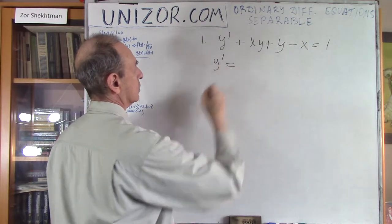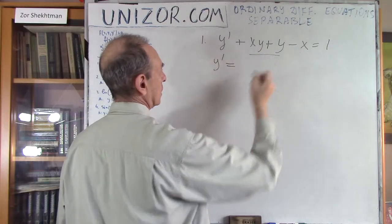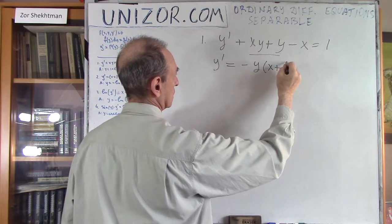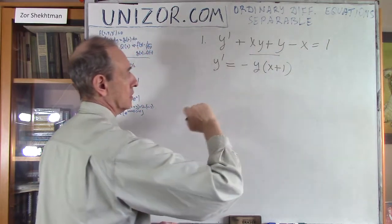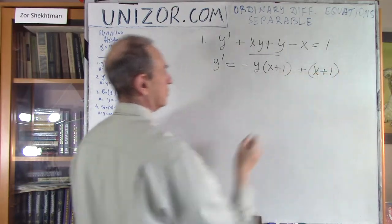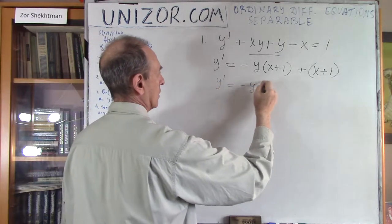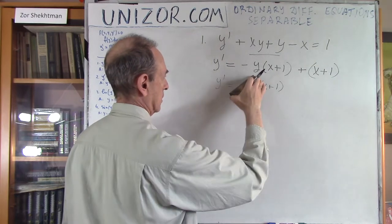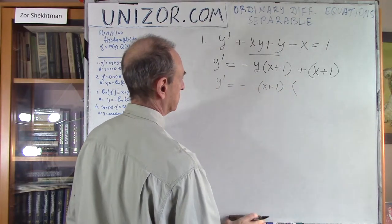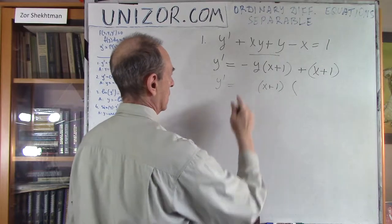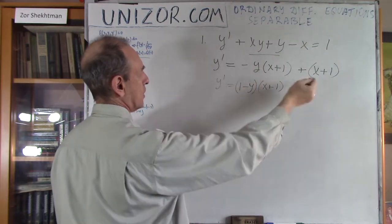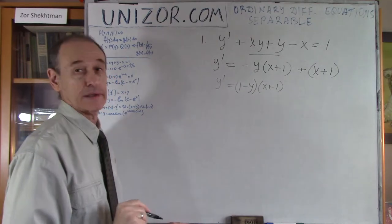We will factor out y. So on one side it's minus y(x + 1), because those terms are on that side. And minus x would also be on this side, plus x plus 1. Now, we can factor out (x + 1), and we will have (1 - y). If you factor out (x + 1), you get (1 - y). Now I can actually do this separation.